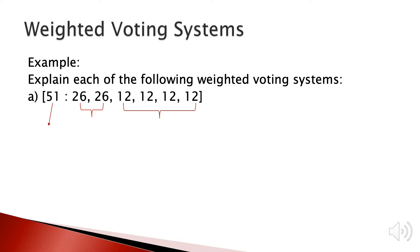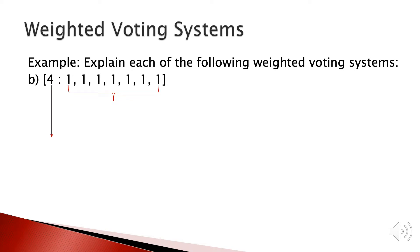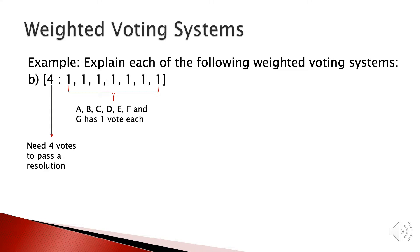For example, in this weighted voting system the quota is 51, meaning the system needs 51 votes to pass a resolution. The first and second voter has 26 votes each and each of the remaining voters has 12 votes each. Another system needs only 4 votes to pass a resolution and each voter has one vote — an example of a one person one vote situation. Because there are seven voters, a simple majority is enough to pass a resolution.